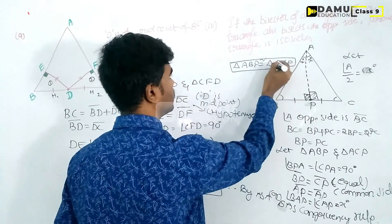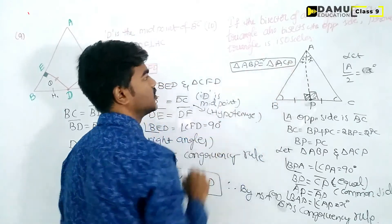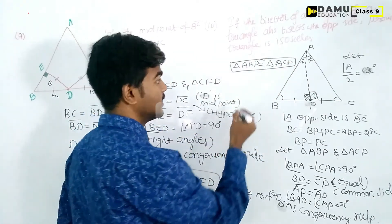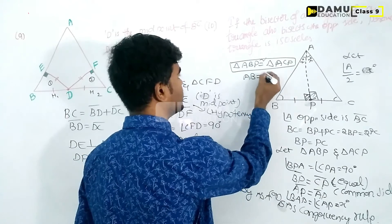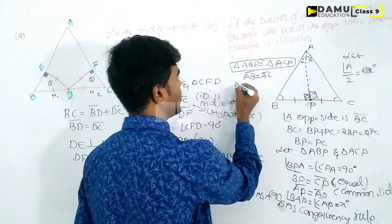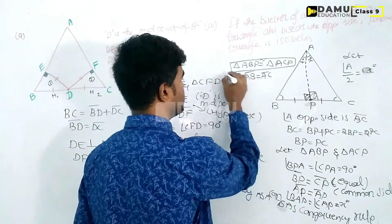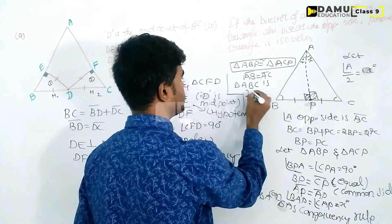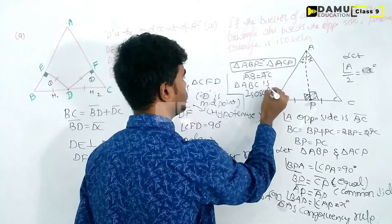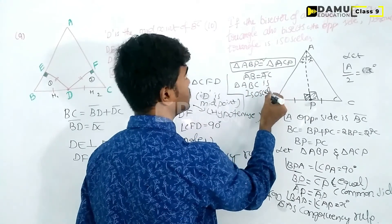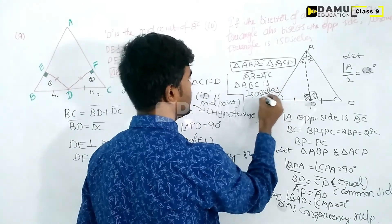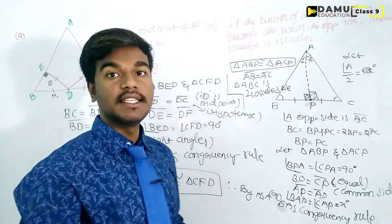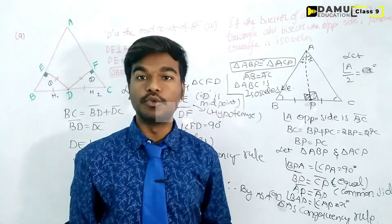Therefore, since triangle ABP is congruent to triangle ACP, we have AB equals AC. Therefore triangle ABC is an isosceles triangle. This is what we needed to prove.